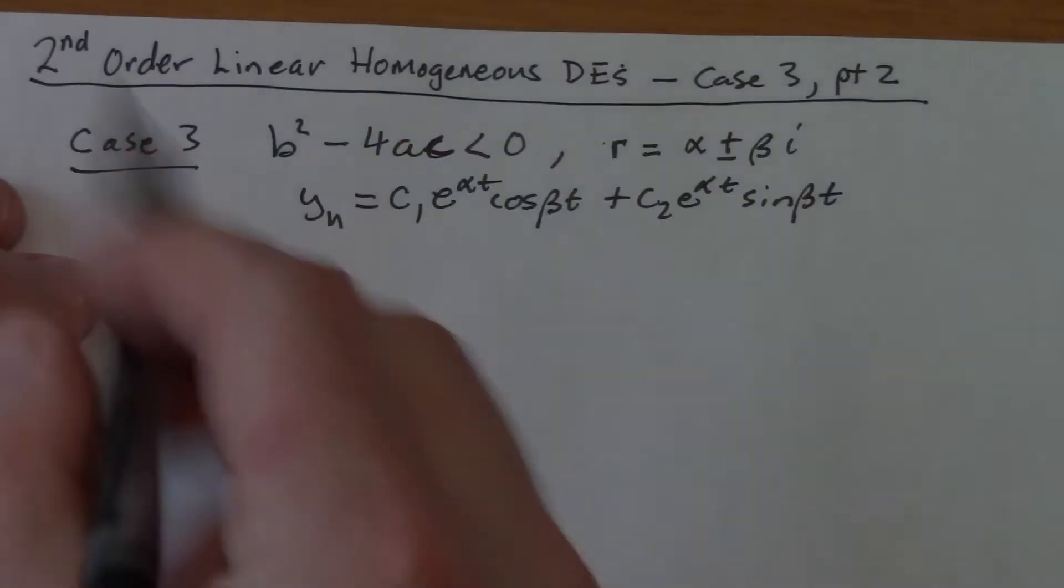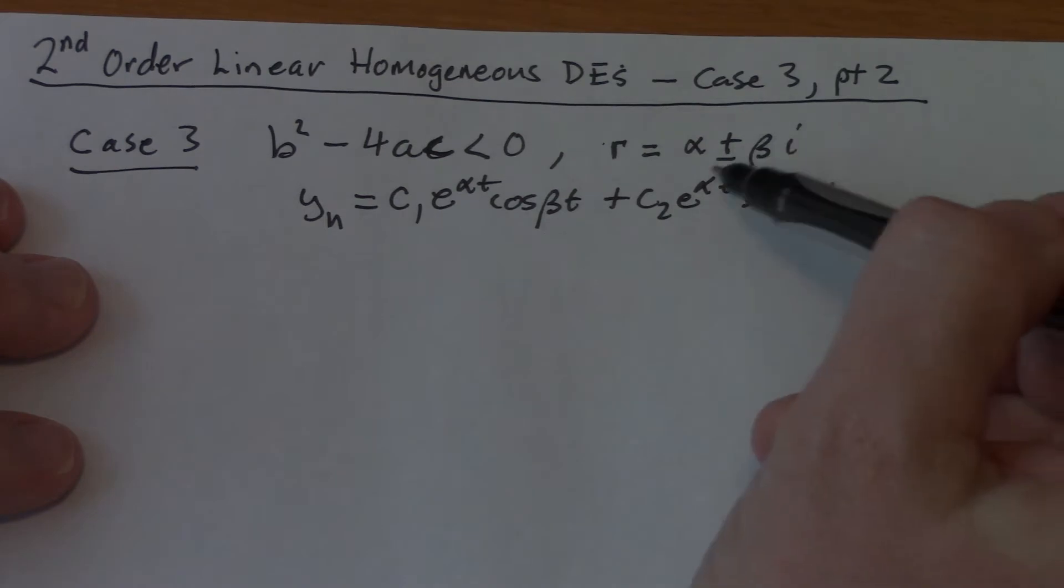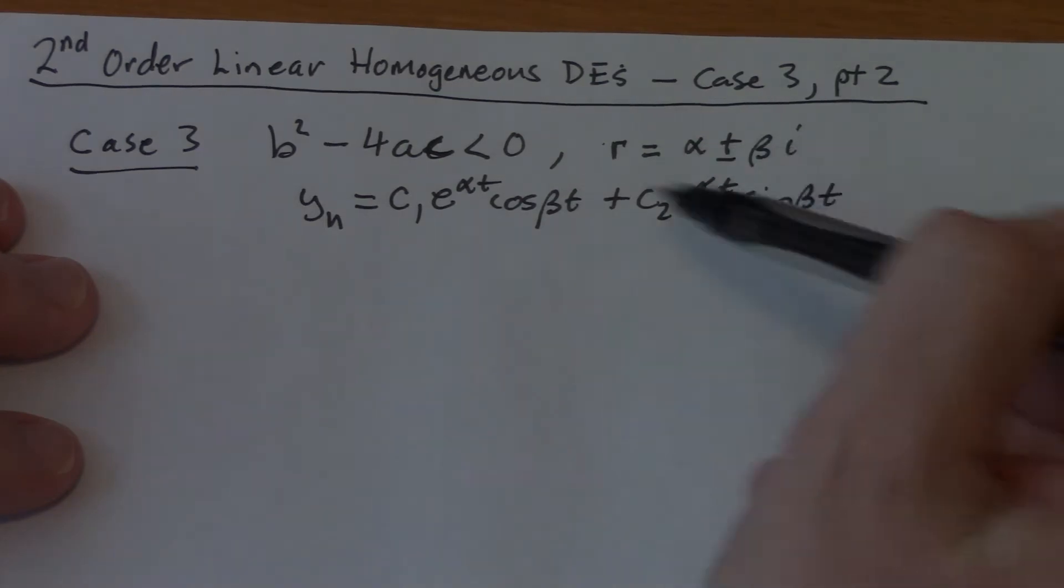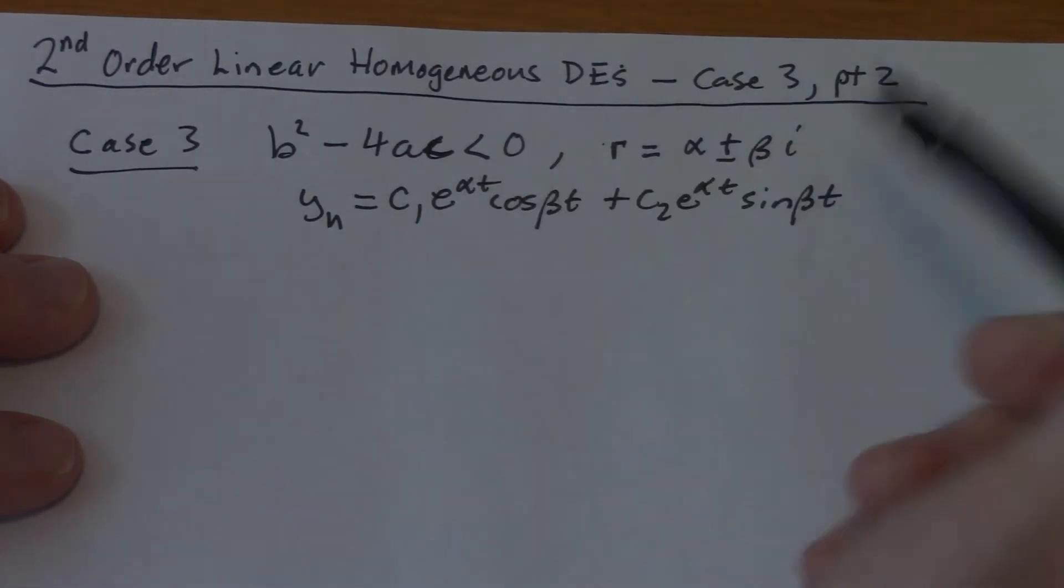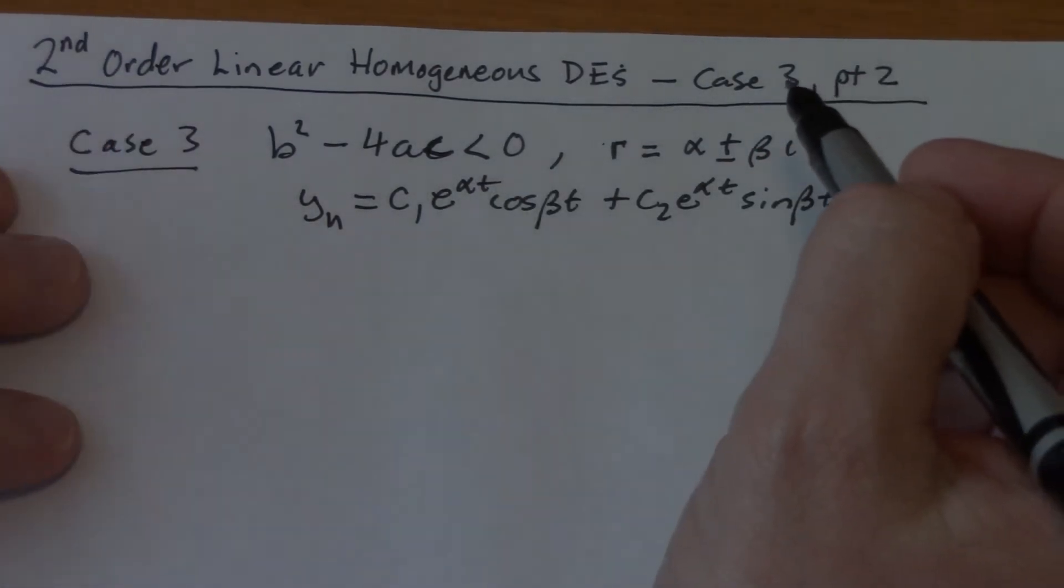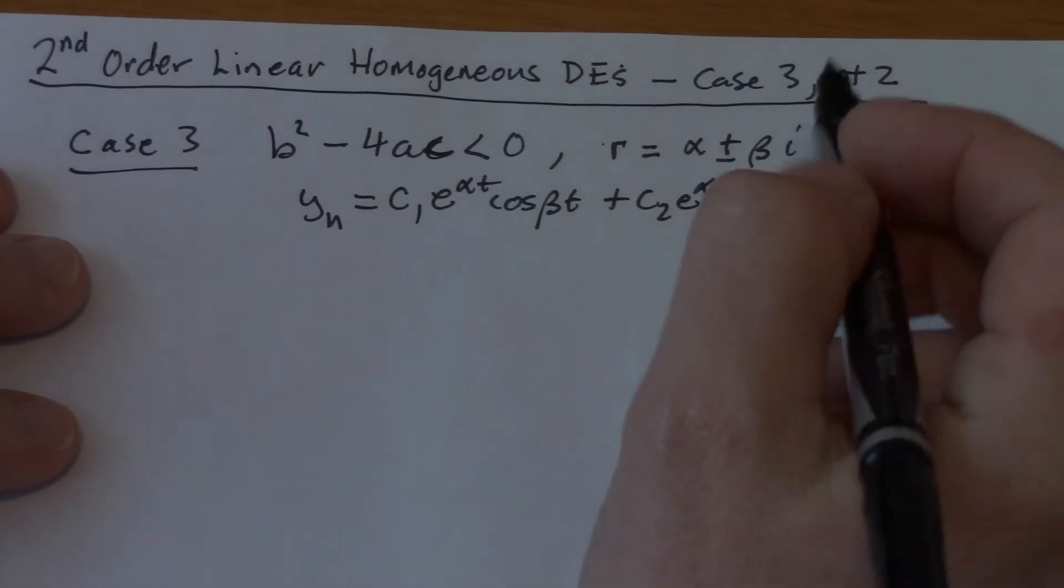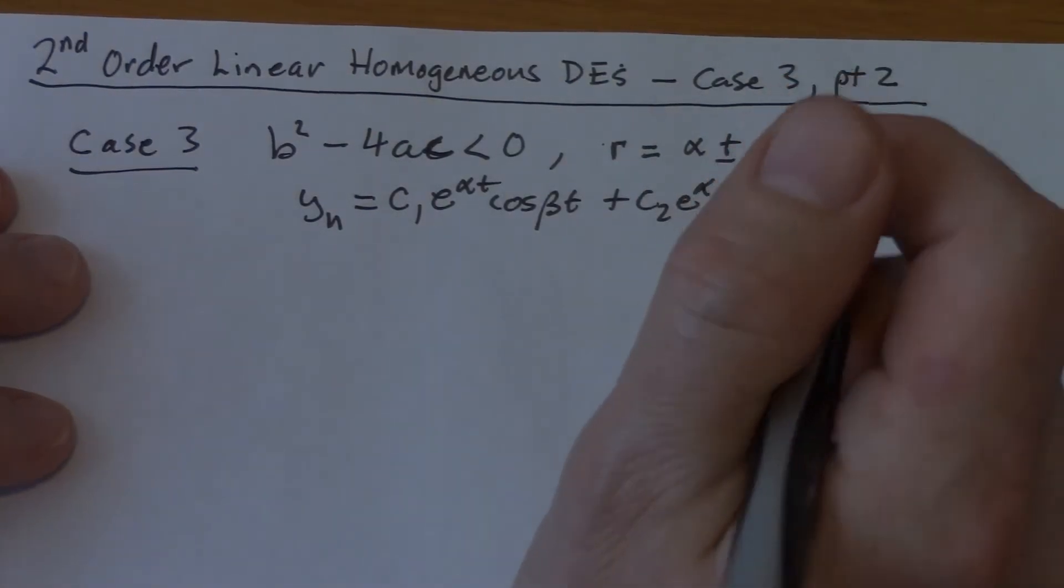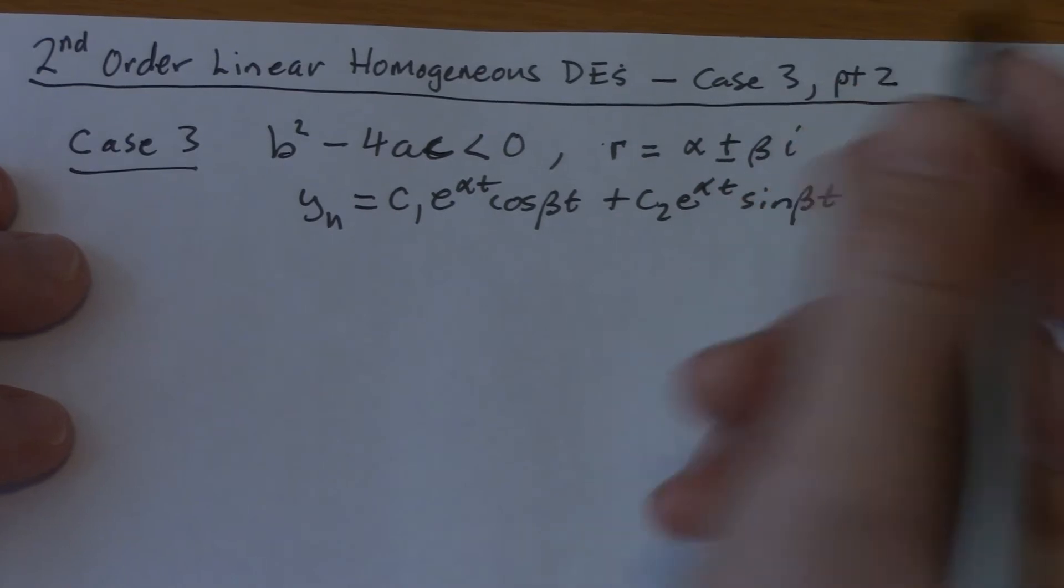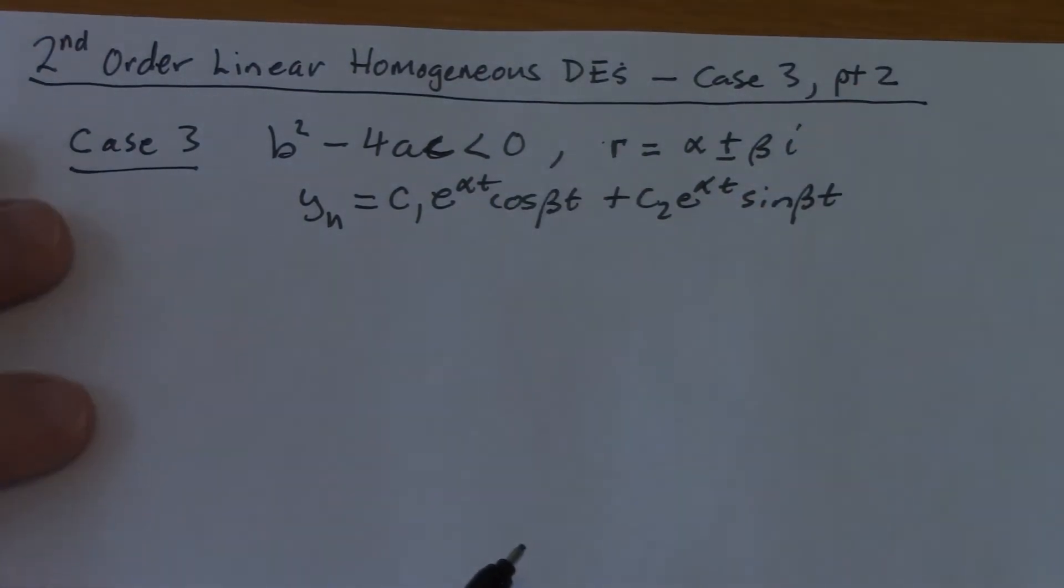Just to hit on something I didn't hit on last time, we've used the alpha plus beta i to come up with these two guys. If we'd used the alpha minus beta i, we would have the same two solutions. Instead of saying u of t plus i v of t, it would be u of t minus i v of t, but u of t and v of t would still be the two real valued solutions. That's why we didn't look at that.